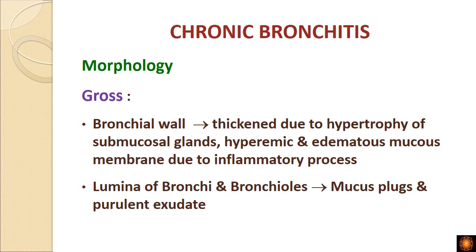Looking at the gross morphology, the bronchial wall is thickened due to hypertrophy of the submucosal glands. The mucous membrane is hyperemic and edematous due to inflammation. The lumina of bronchi and bronchioles are blocked by mucus plugs, and purulent exudate is seen in the lumen.